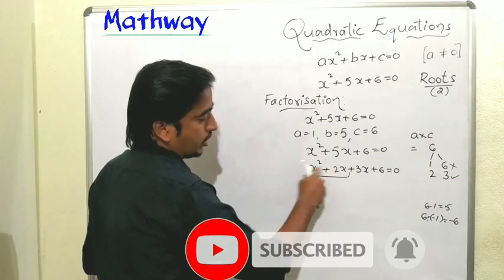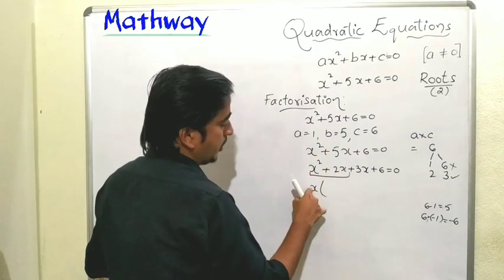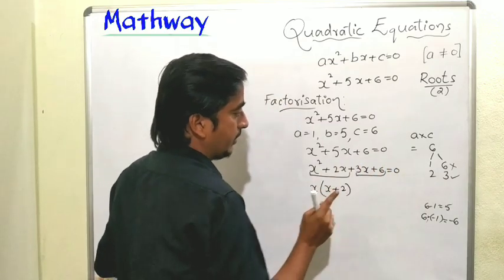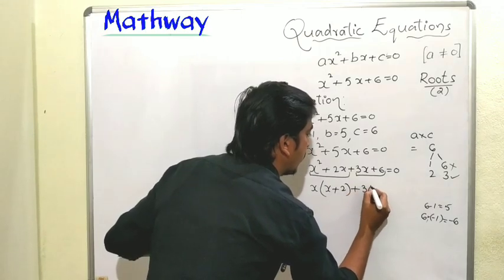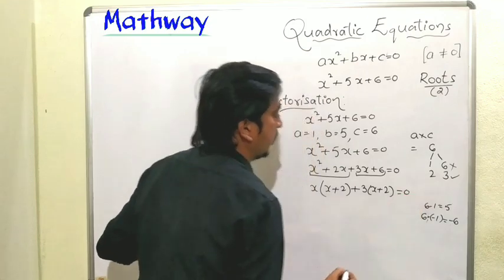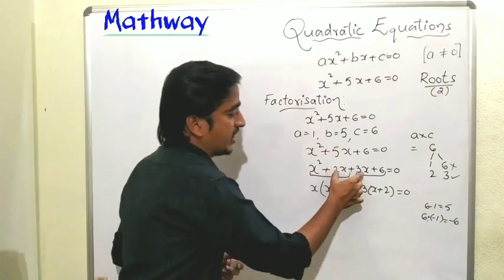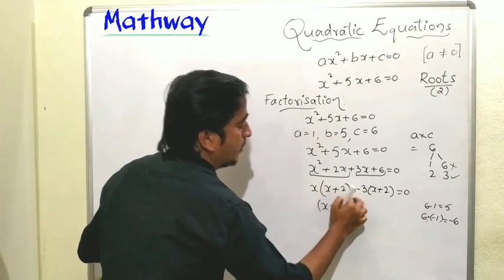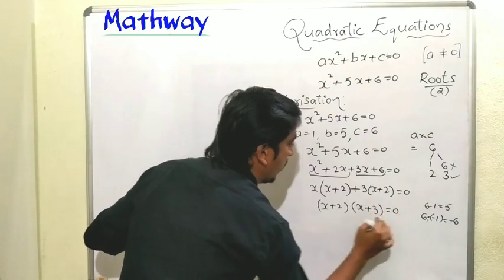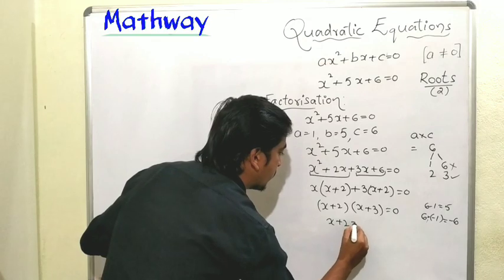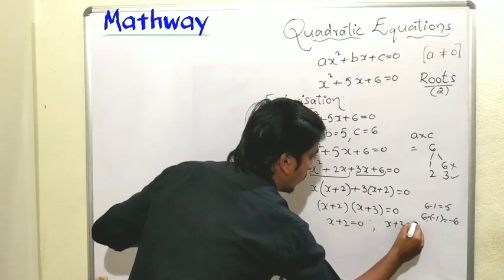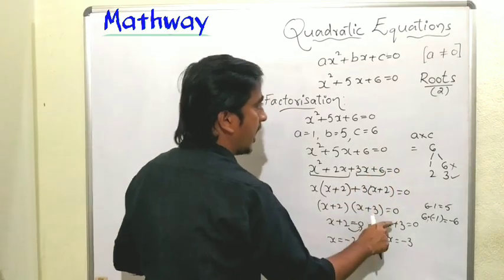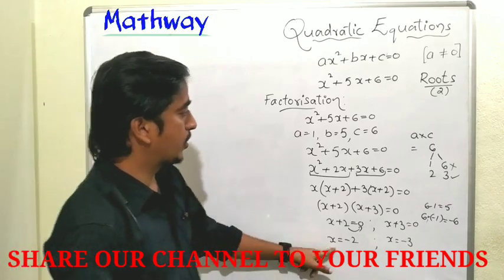From the first two terms x² + 2x, take x as common: x(x + 2). From the next two terms 3x + 6, take 3 as common: 3(x + 2). Now both terms share the factor (x + 2), so: (x + 2)(x + 3) = 0. Setting each factor to zero gives x + 2 = 0, so x = -2, and x + 3 = 0, so x = -3. Therefore, -2 and -3 are the roots.